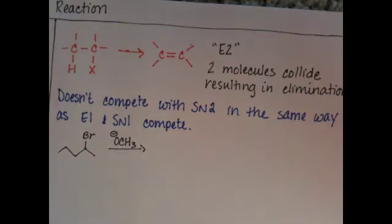When you see a secondary alkyl halide, you don't know if it's going to be SN1 or SN2, because secondaries can do both. But when you see a strong nucleophile like methoxide, you know that that's going to be an SN2 mechanism.